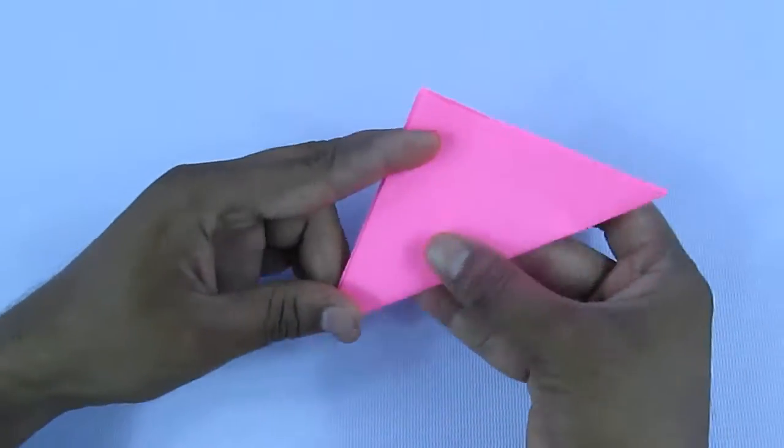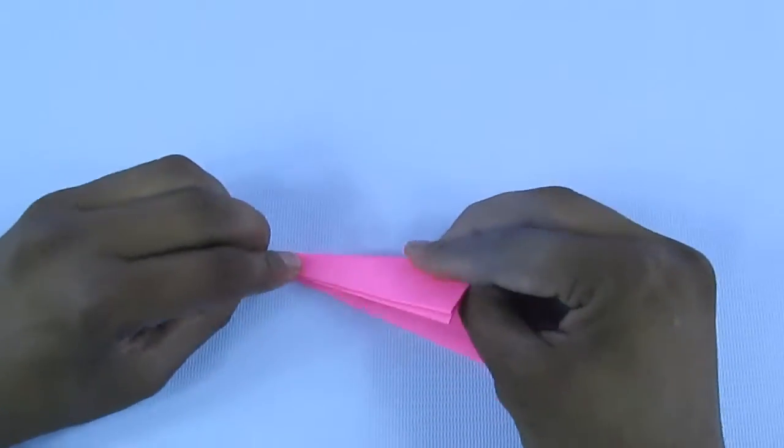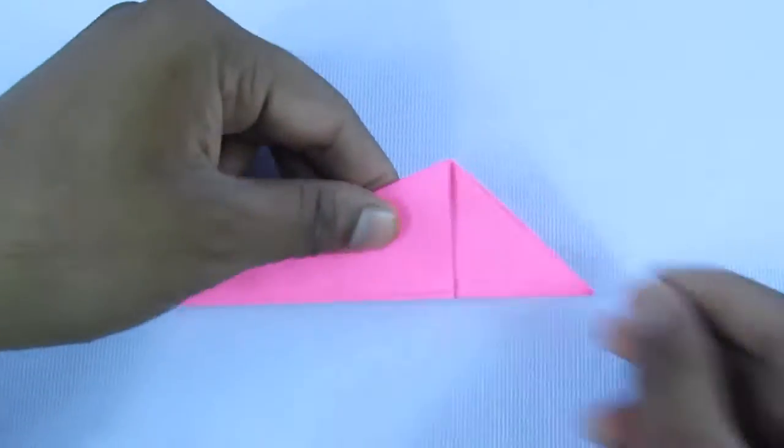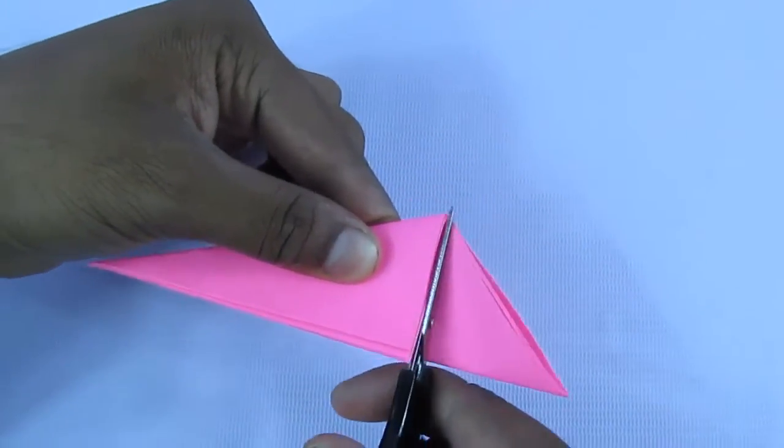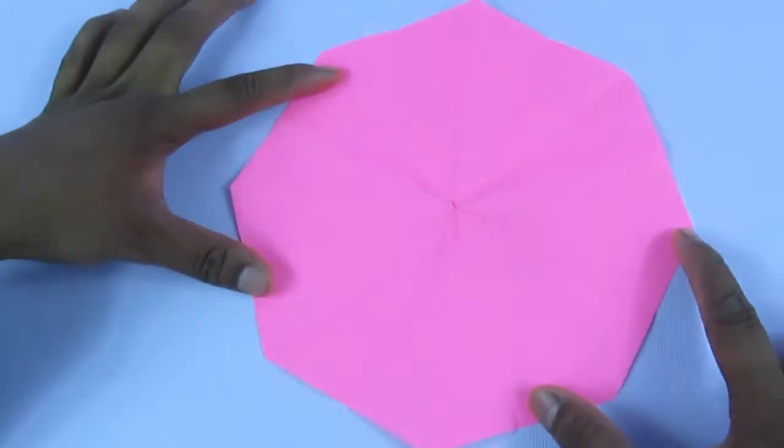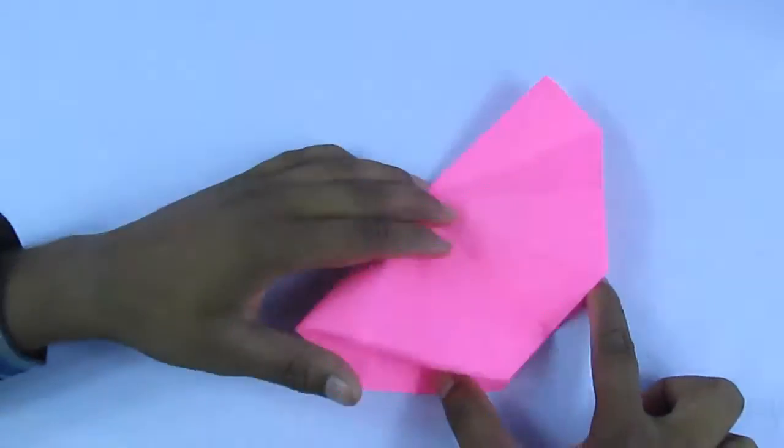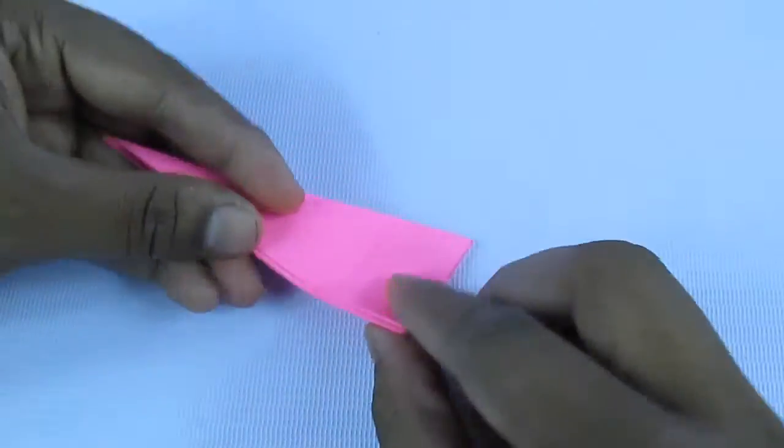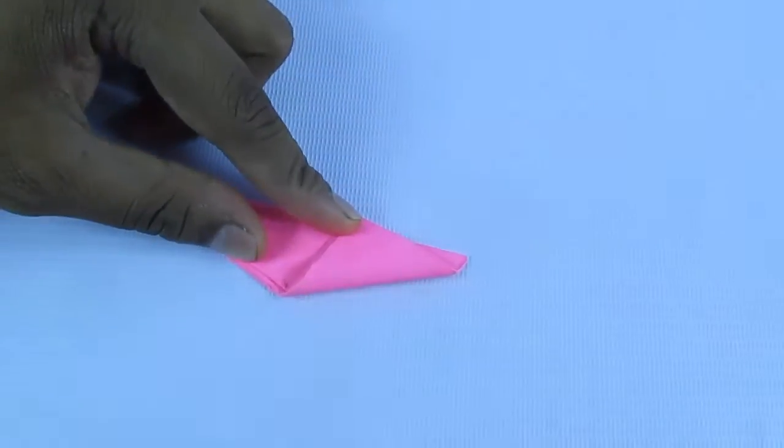Fold again, so we have folded in total four times. Now when we cut perpendicular to the fold, we will see an octahedron. Let's cut in a direction which is not perpendicular to the fold.